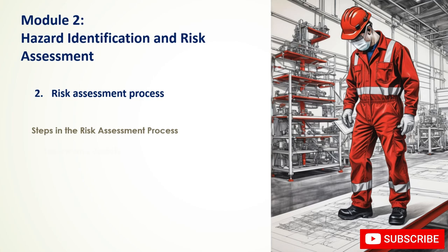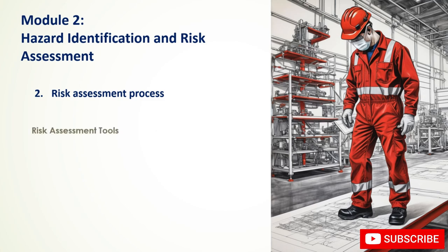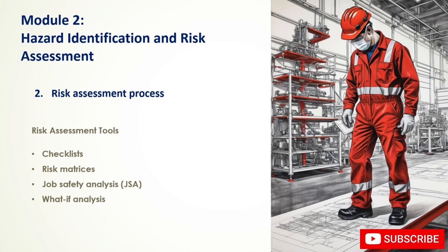Step 5: Review and update — regularly review the risk assessment to ensure accuracy and effectiveness, and update when changes occur such as new equipment, processes, or personnel. Risk assessment tools include checklists of potential hazards, risk matrices evaluating likelihood and severity, job safety analysis (JSA), what-if analysis, and failure mode and effects analysis (FMEA).